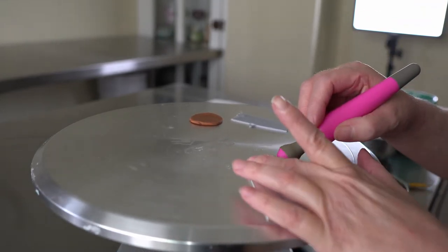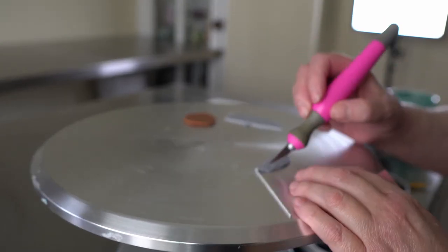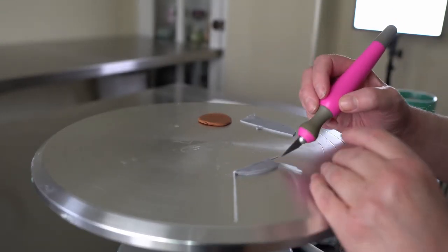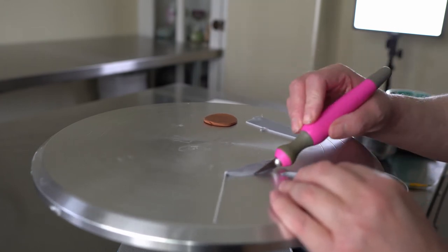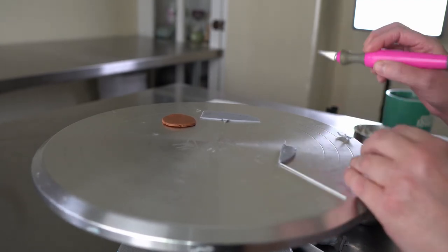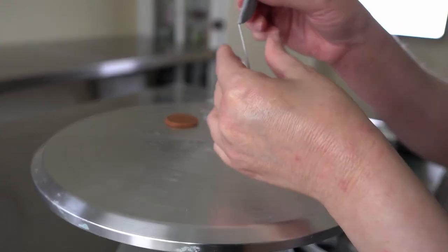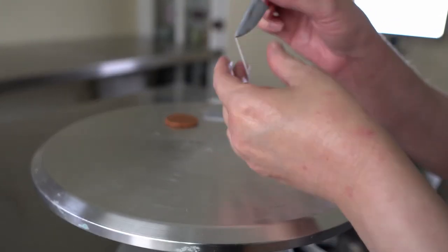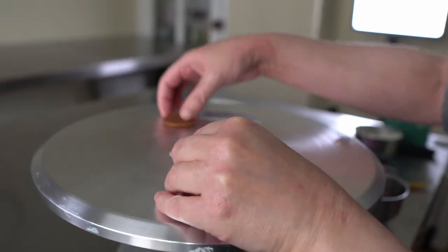Just continue to shape the blade. Once I have my blade looking nice, it's on the wire, it's stable, I'm going to go ahead and make the handle.